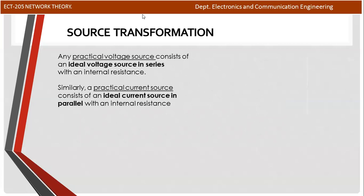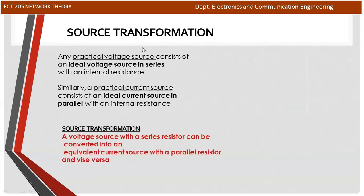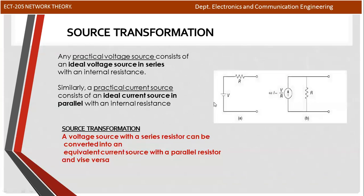Take care of the direction. A practical voltage source has an ideal voltage source in series with one resistance. A practical current source has an ideal current source in parallel with one resistance. Series is parallel. Source transformation technique: one voltage source in series with one resistor — we will use the equivalent current source with a parallel resistor. A voltage source in series with a resistor can be converted into a current source with a parallel resistor.